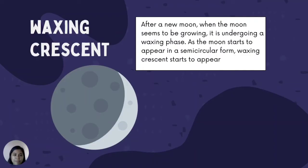Waxing Crescent: After a new moon, when the moon seems to be growing, it is undergoing a waxing phase. As the moon starts to appear in a semicircular form, the waxing crescent starts to appear.